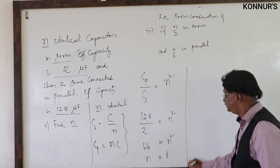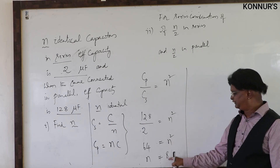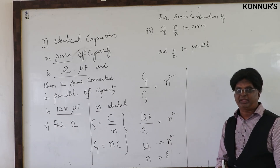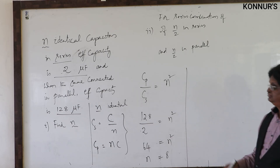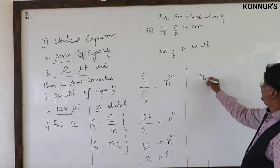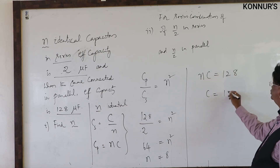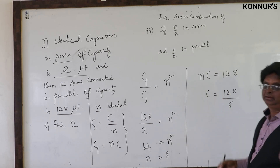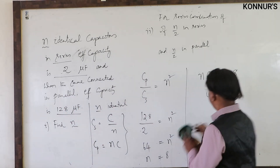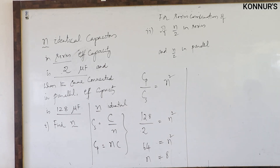So n = 8. The capacity of each capacitor: from n×C = 128, we get C = 128/8 = 16 microfarad. Now the same data can be extended into another question.